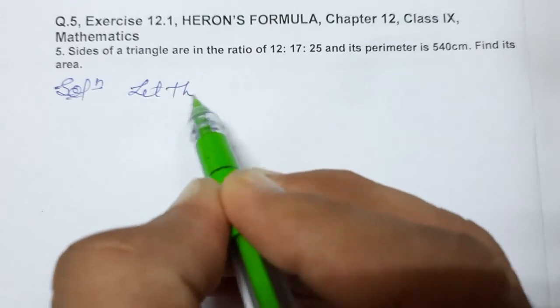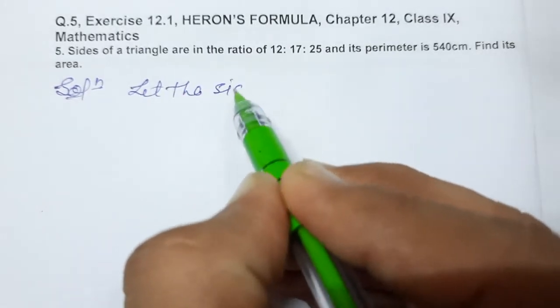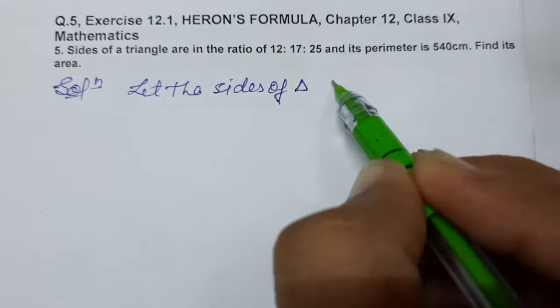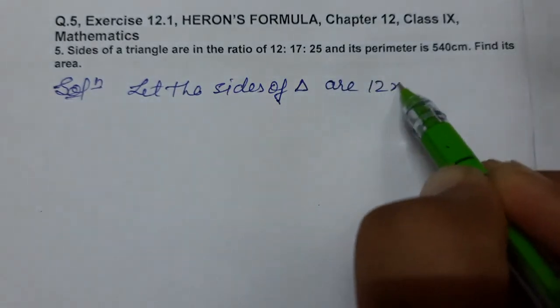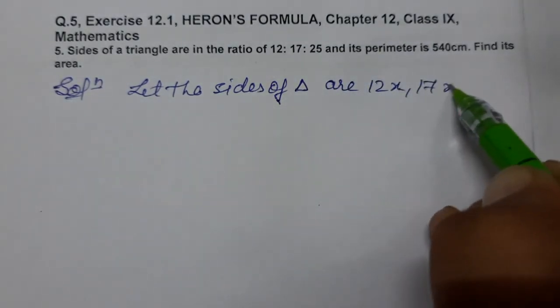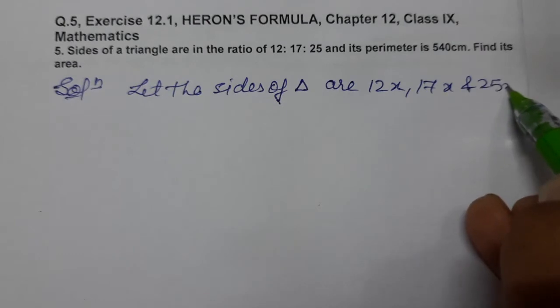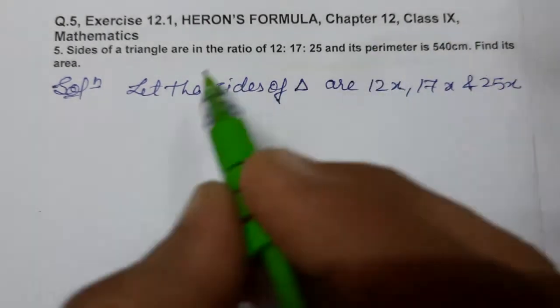Let the sides of triangle are 12x, 17x, and 25x. Or unka perimeter diya rakha hai. Perimeter means sum of three sides.